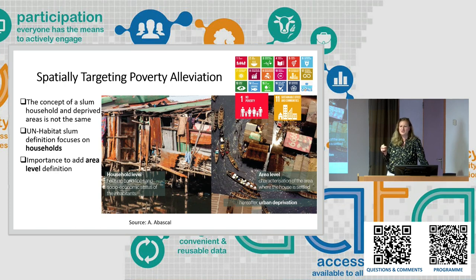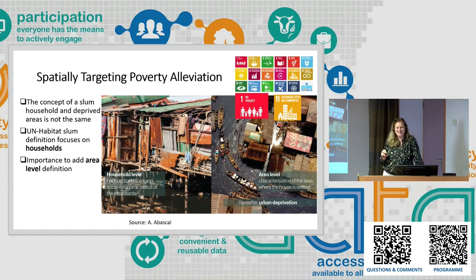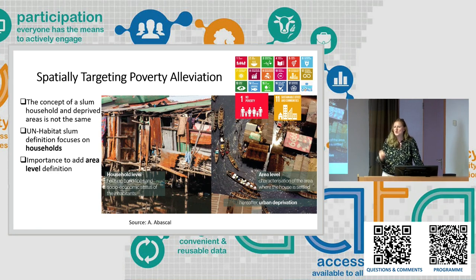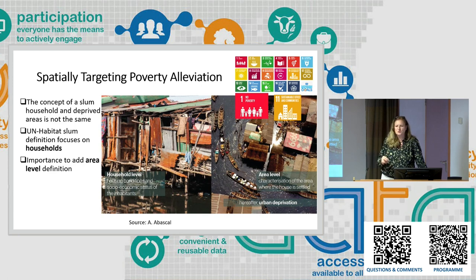Presently, for example on SDG 11, these are national estimates which are — I shouldn't say this in a public session — but close to rubbish. Because they are basically estimates, there are a lot of politics behind, and they have no spatial context. You don't know where these areas are located in cities. City X has so many slum populations — these are national estimates which are simply brought down to the cities without understanding the local context.